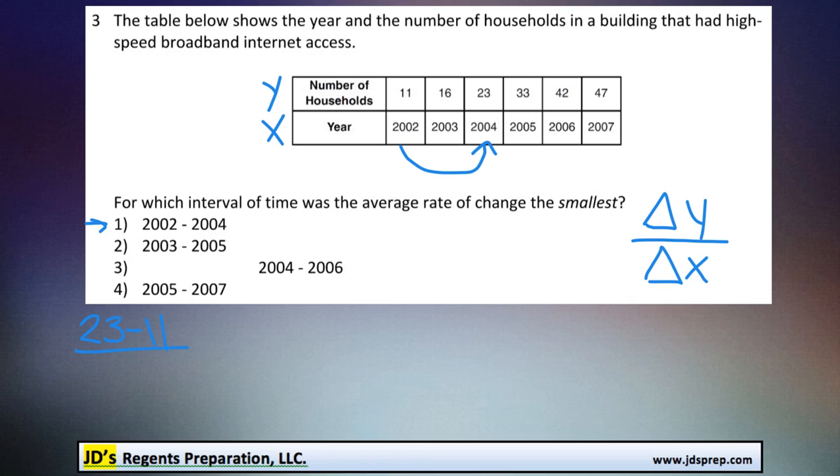And then we're going to divide it by the change in the x variable, which in this case is the number of years. We can see that from 2002 to 2004 is simply just a two-year difference. So if we were to calculate that, 23 minus 11 gets us 12, and then 12 divided by 2 is 6. So our rate of change is 6 for this first example.